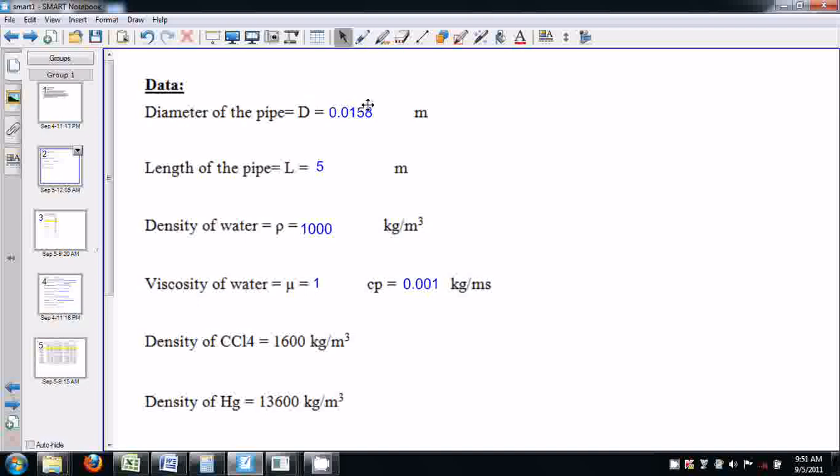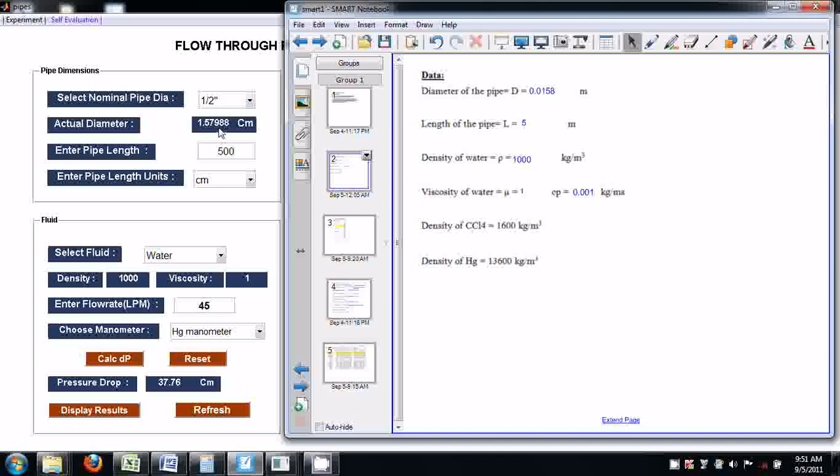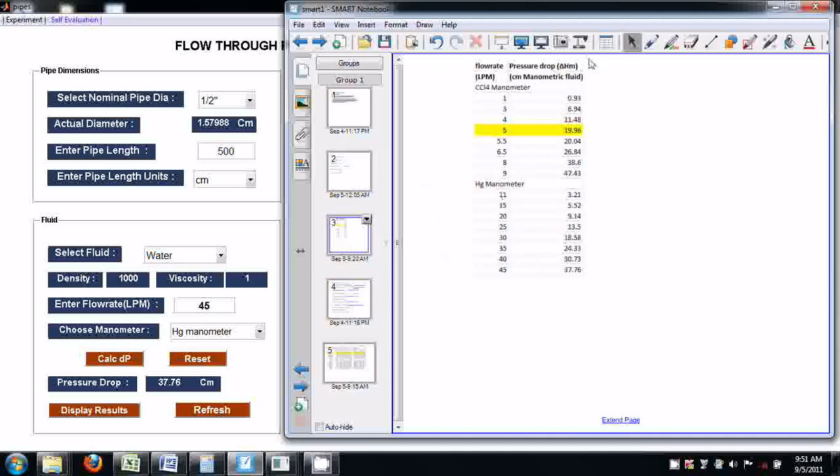This is the diameter of the pipe, the actual diameter of the pipe, and length of the pipe. Density of water, viscosity, and density of CCL4. Let's do sample calculations for 5 lpm flow rate.